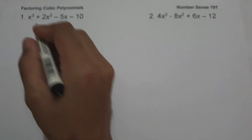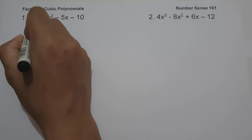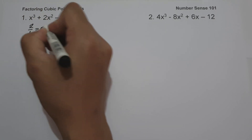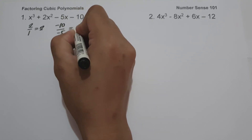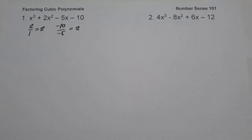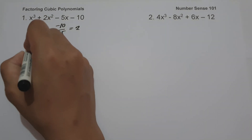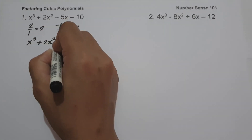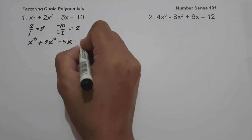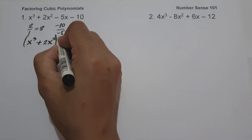To check, let us have 2 divided by 1, that is 2, and then negative 10 divided by negative 5, that is 2. If the first two coefficients have the same ratios as the last two coefficients, then we can solve the given polynomial by factoring by grouping. So let us rewrite x cubed plus 2x squared minus 5x minus 10 and factor this one by group.